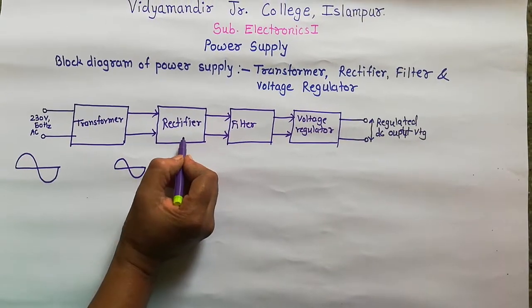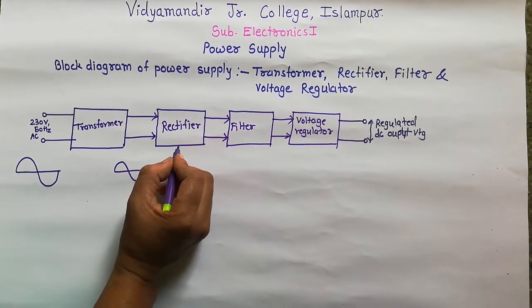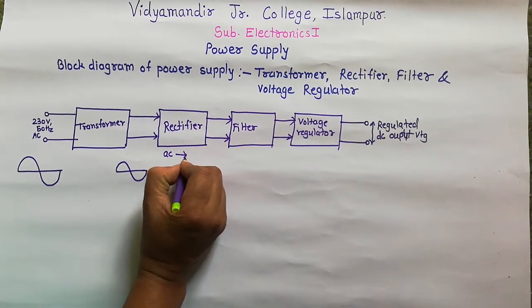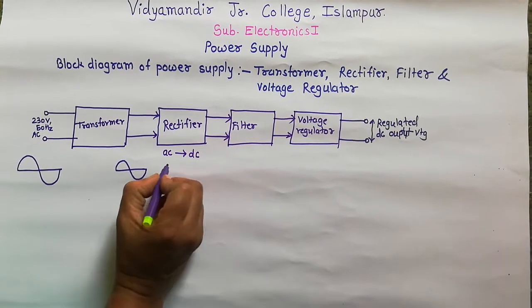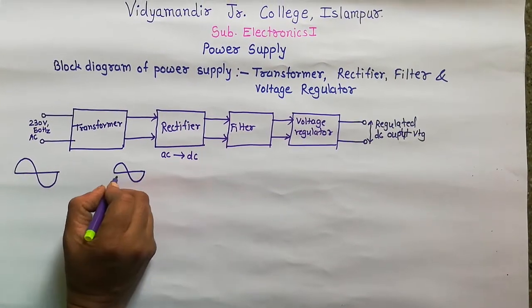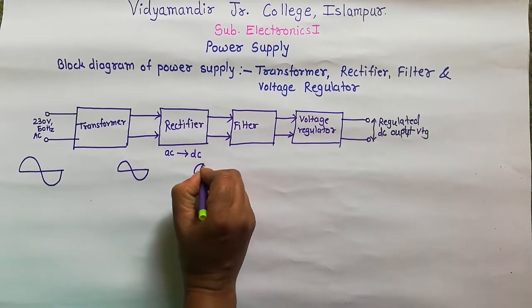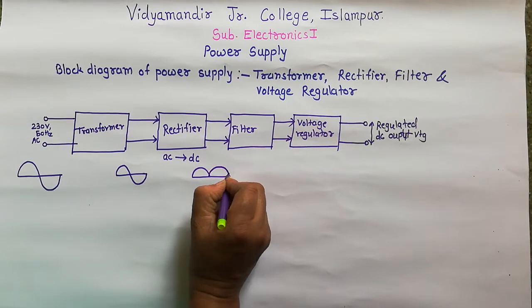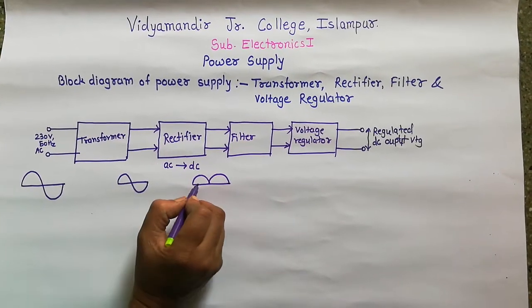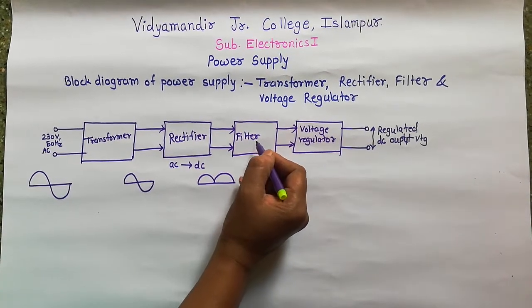This required amount of power is applied to the rectifier circuit. The rectifier circuit is a circuit which converts AC into DC, that is alternating quantity into direct quantity. Alternating means bi-directional and direct means unidirectional. The quantities may be voltage or current. This rectifier's unidirectional output is then applied to the filter.